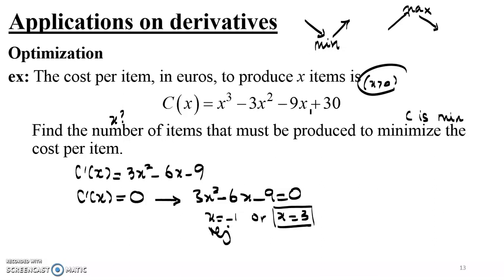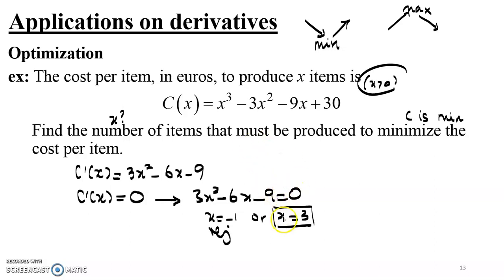Now that we have the root of the first derivative, I need to study the variations of the function to determine whether at X equals 3 we have a minimum, a maximum, or neither. There are two methods: the first derivative test, which involves studying the sense of variation of the function and setting up a table of variations to observe the behavior around X equals 3, or the second derivative test.